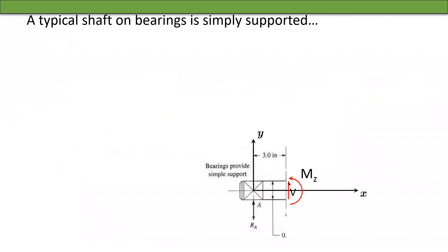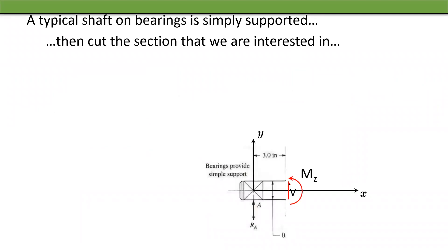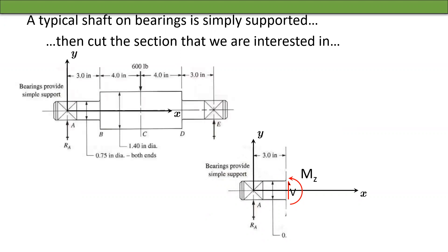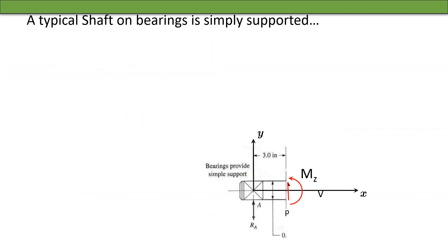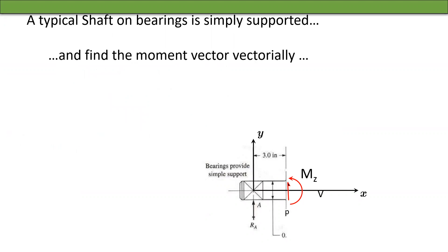Now we cut the section we are interested in — we cut it at B, just past the step, so we are always looking at the smaller diameter at the step. We slice it and find the moment vector M. We don't really care about the shear force V; we just care about M, because moments are more important than shear forces in most cases for computing fatigue life.